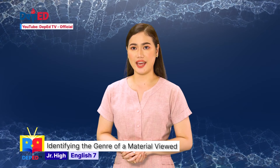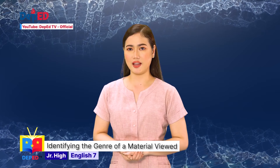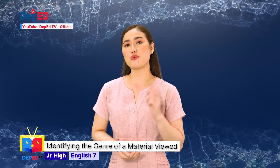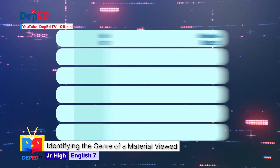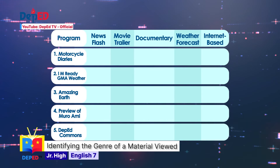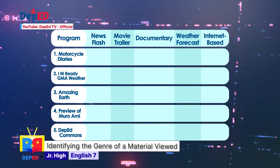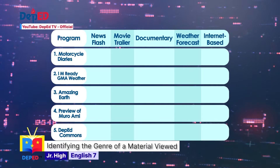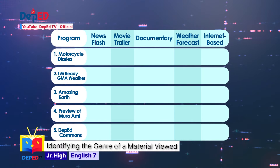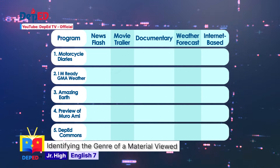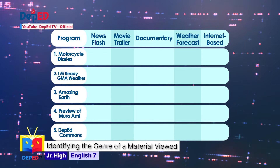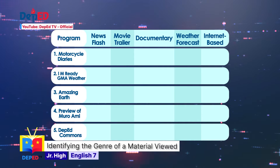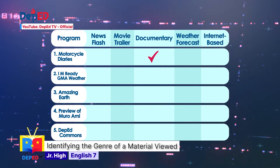Now, get ready to watch and look for each type of video content. Identify which genres they belong to and write your answers on your paper. Number 1: Motorcycle Diaries — is it a newsflash, movie trailer, documentary, weather forecast, or internet-based program? And the answer is, it's a documentary.